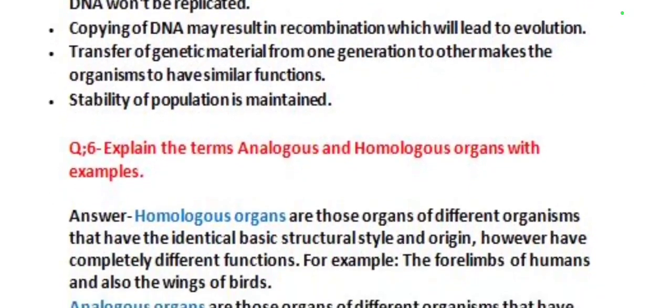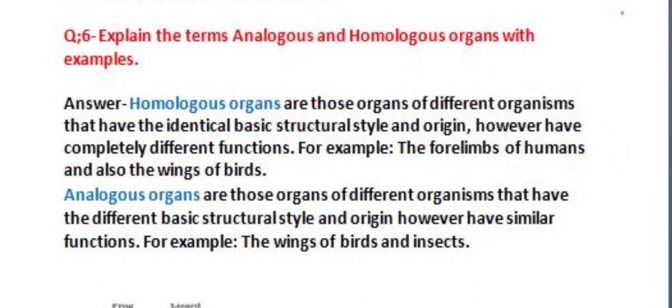Our next question is: explain the terms analogous and homologous organs with examples. Homologous organs are those organs of different organisms that have identical basic structural style and origin, however have completely different functions. For example, the forelimbs of humans and the wings of birds.